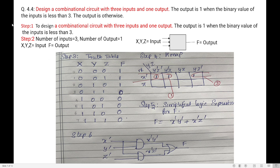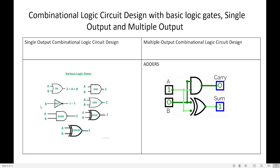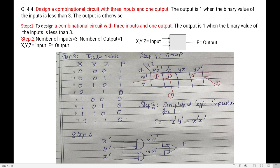The example I have taken is from Morris Mano, question 4.4. He asks us to design a combinational circuit which has three inputs and one output. We are going to design a combinational circuit where we have three inputs and there would be only one output.